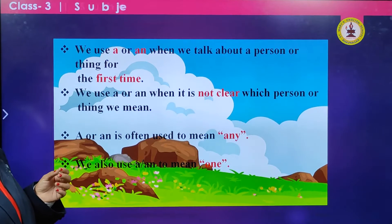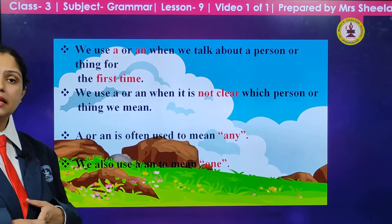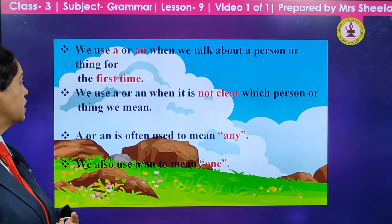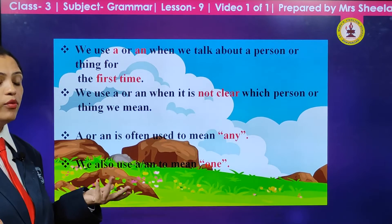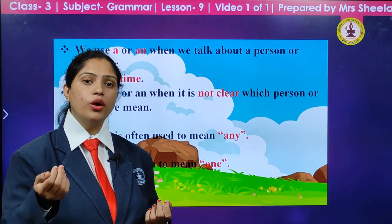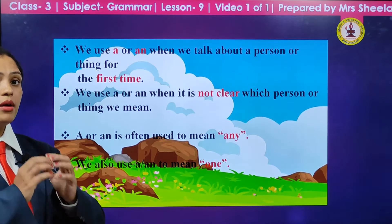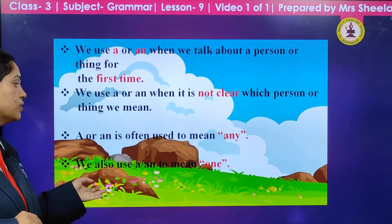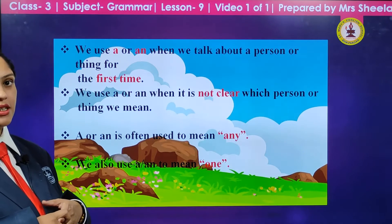We use a or an when we talk about a person or thing for the first time — when we do not know which particular person or thing we are talking about. We use indefinite articles a or an. We also use a or an when it is not clear which person or thing we mean — a or an is often used to mean 'any.' For example, send a girl to me — it can be any girl. But if I say send Smitha to me, I particularly mean Smitha, so I will not use a or an. We also use a or an to mean one; when there is more than one, we do not use a and an.